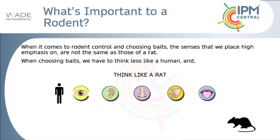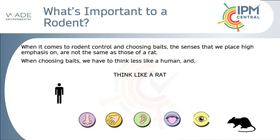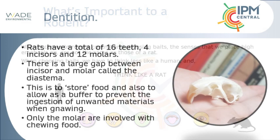Mouse droppings are much smaller — more spindly, about the size of a grain of rice. Rats and mice also leave behind what we call urine pillars. They communicate with their urine, expressing proteins and pheromones which allow them to communicate with one another. Mice do this so prolifically that they create tacky little pillars of urine on top of objects, which look like little blobs of molasses.